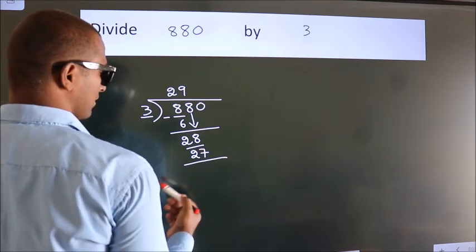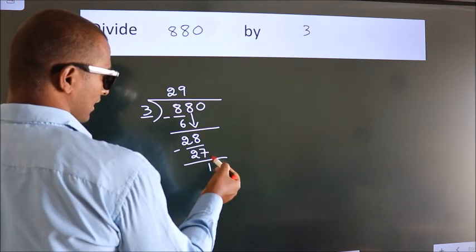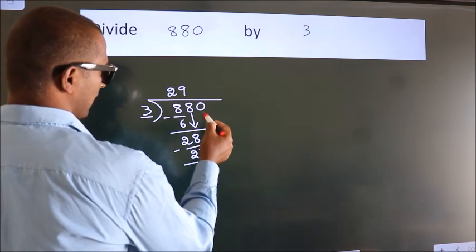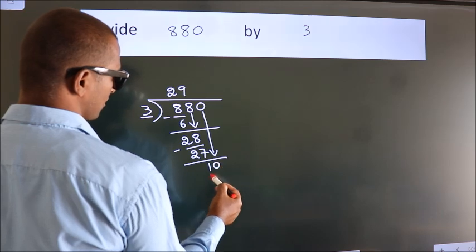Now, we subtract. We get 1. After this, bring down the beside number. So, 0 down. So, 10.